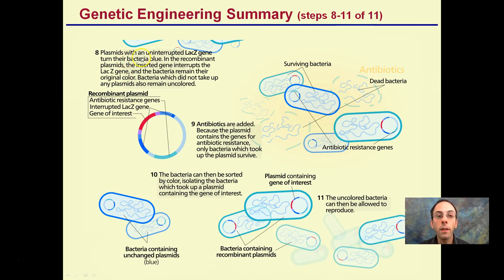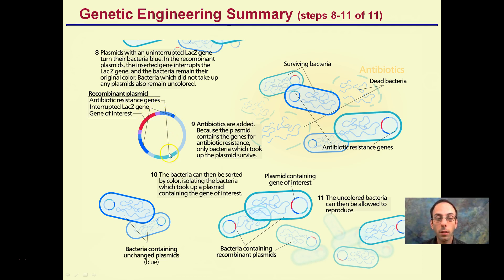Moving to steps eight through nine: plasmids with the lac gene turn the bacteria blue. In recombinant plasmids, the inserted gene interrupts the lac gene and bacteria remain their original color. Bacteria that do not take up any plasmids also remain uncolored. Antibiotics can also be added because the plasmid contains antibiotic resistance genes — for example, to produce insulin. This allows us to select for cells that took up our gene of interest, since those that didn't take up the plasmid end up dying when antibiotics are added.